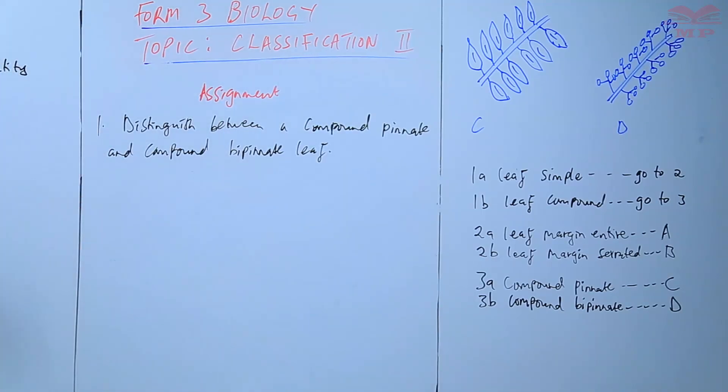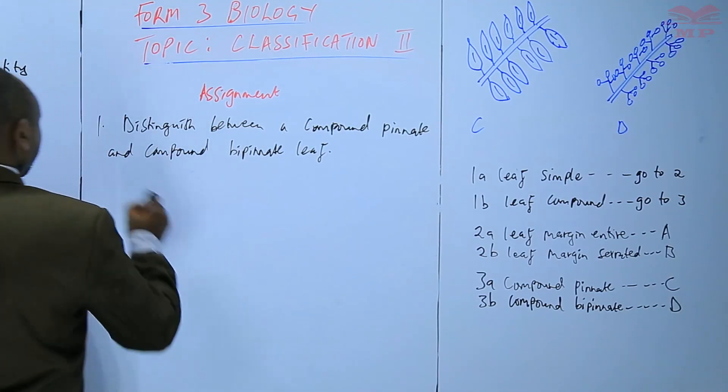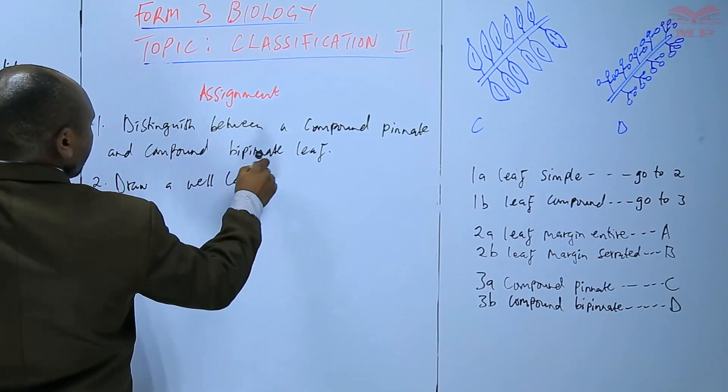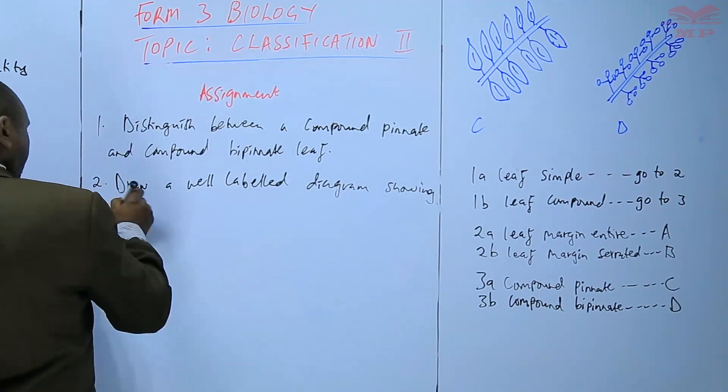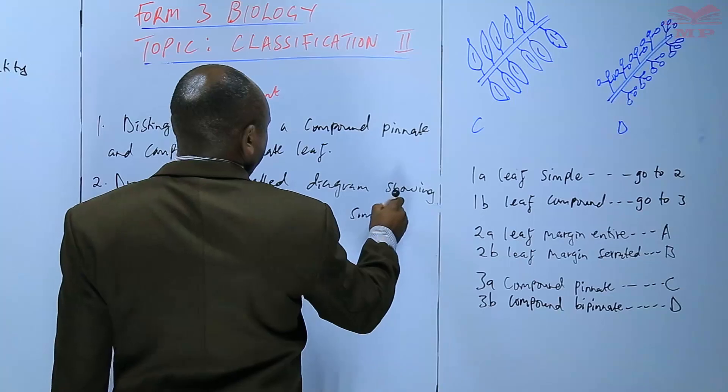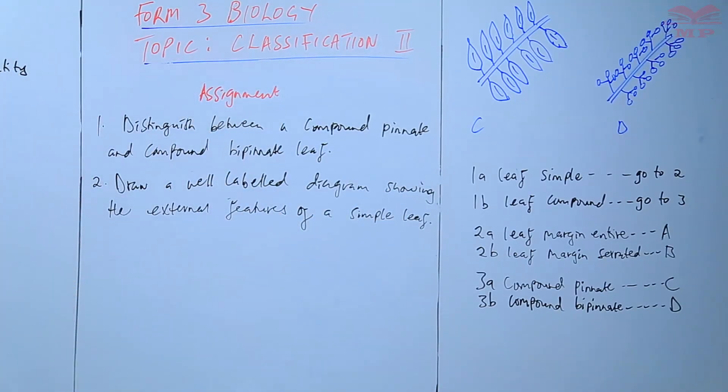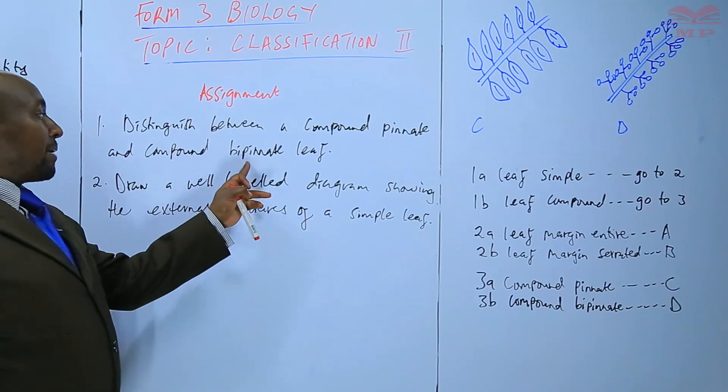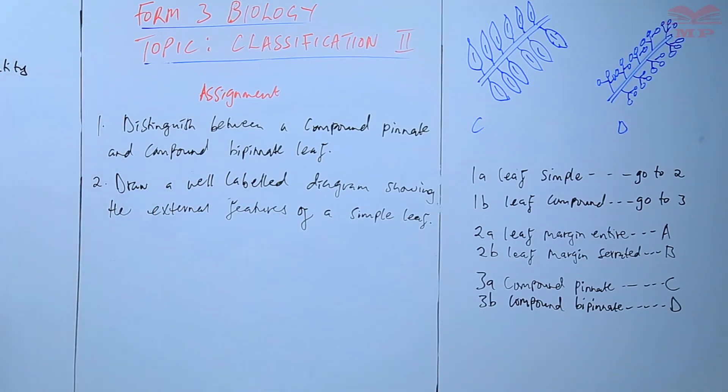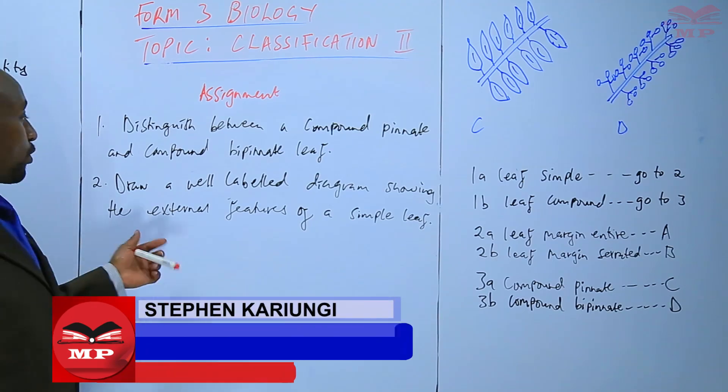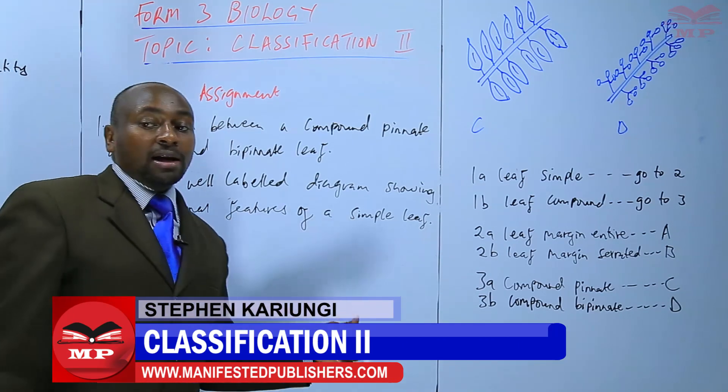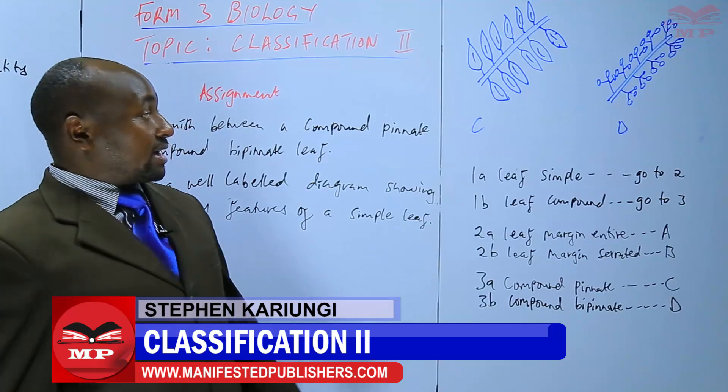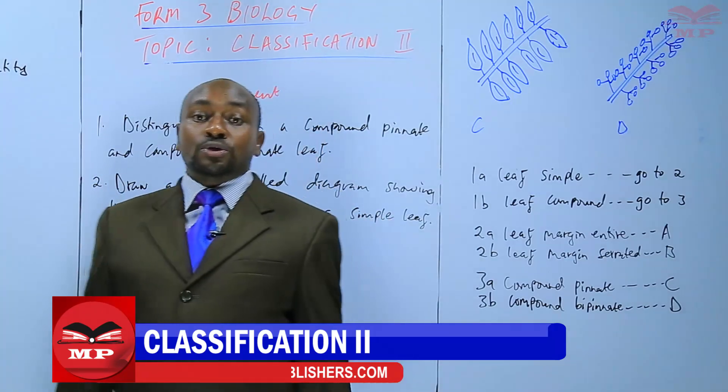We distinguish between a compound bipinnate leaf and a compound pinnate leaf. And then number two, draw and label diagram showing the external features of a simple leaf. We are going to stop there until next lesson. Goodbye.